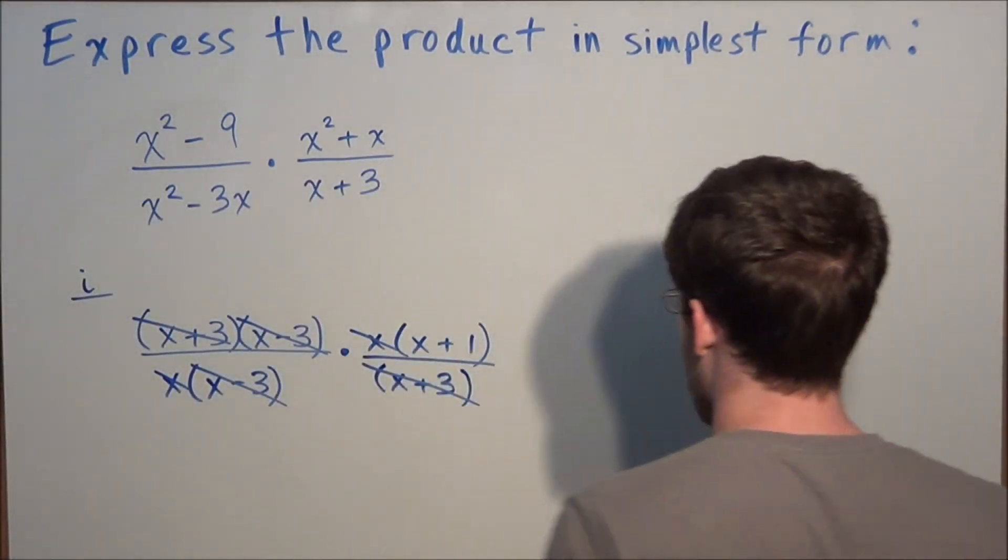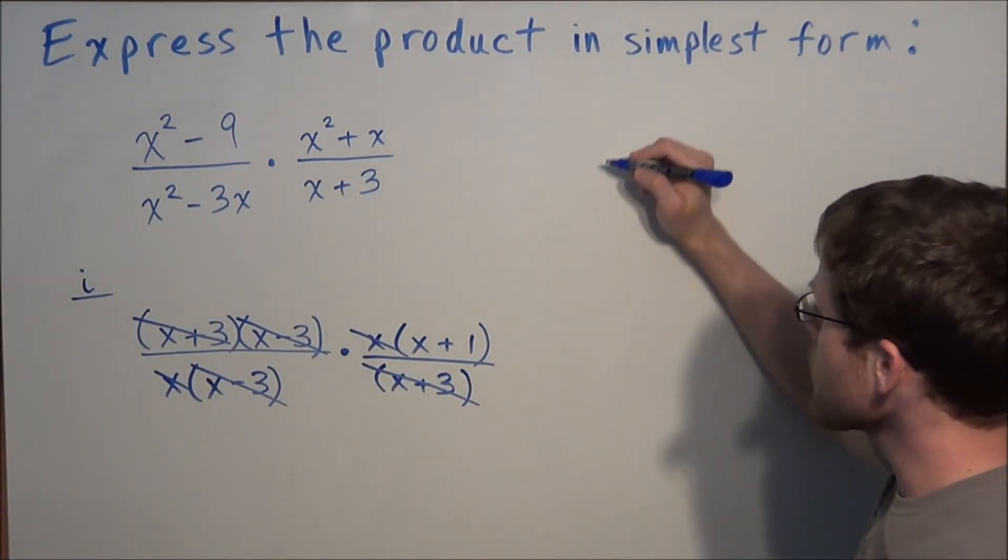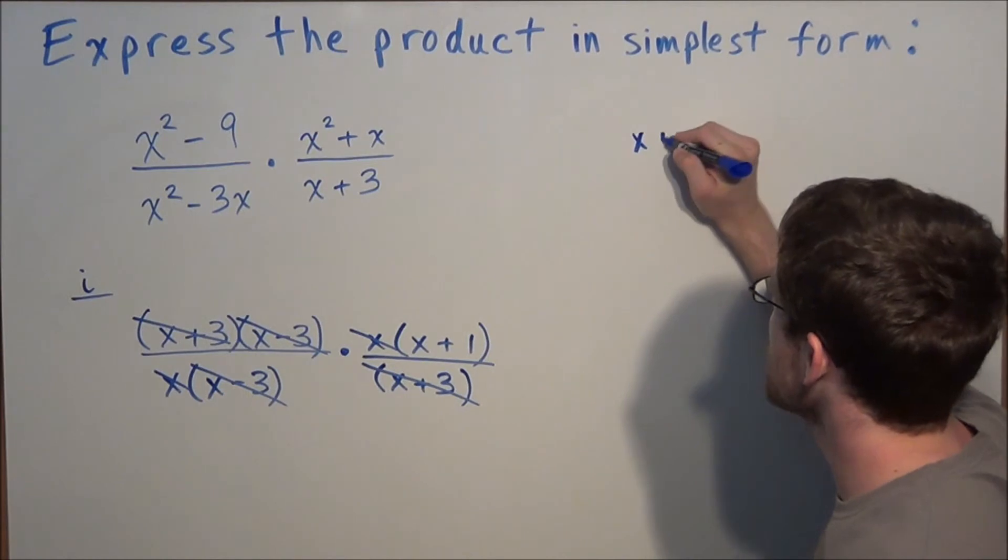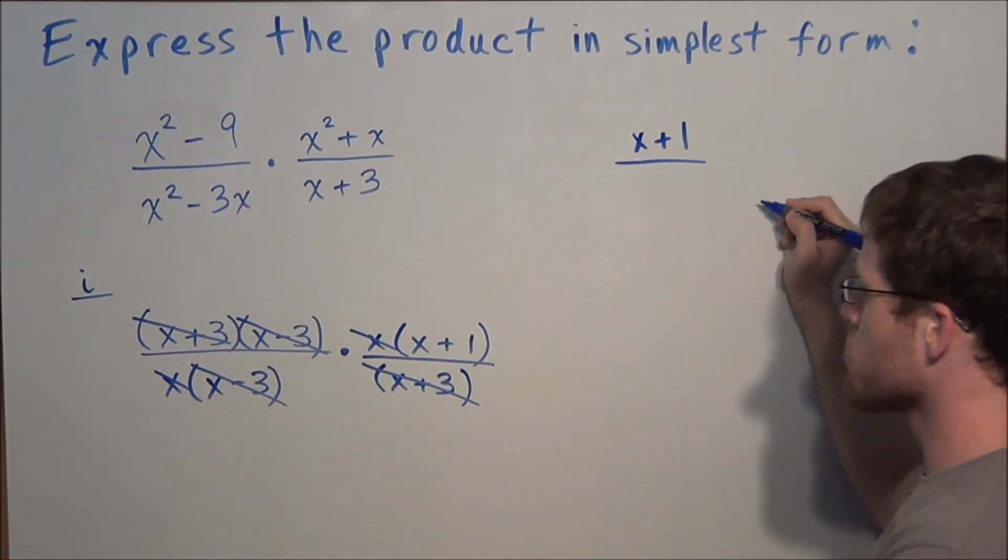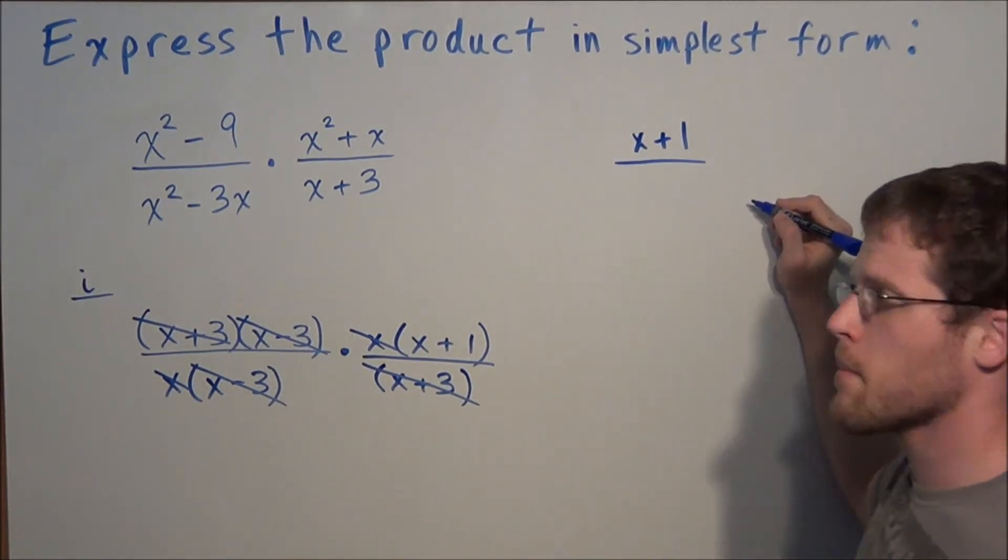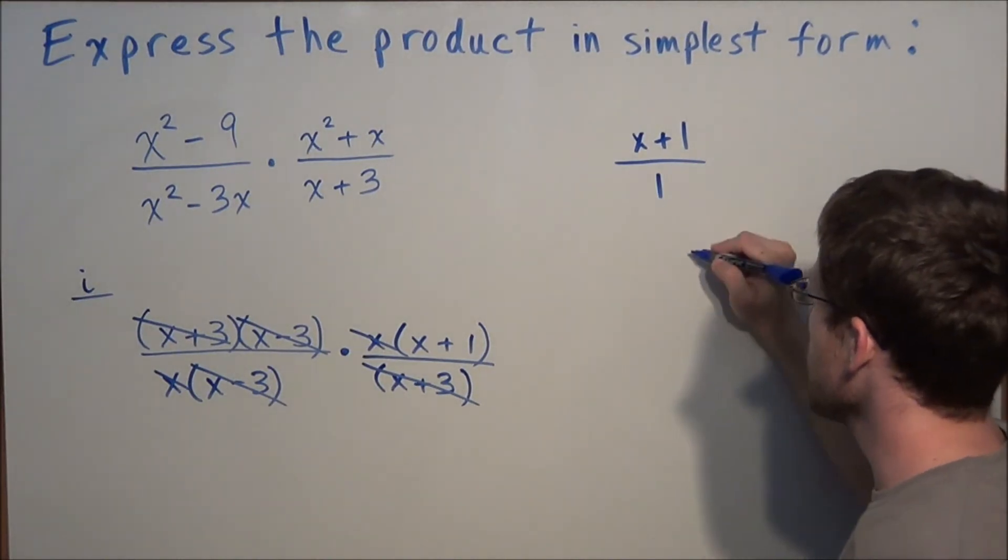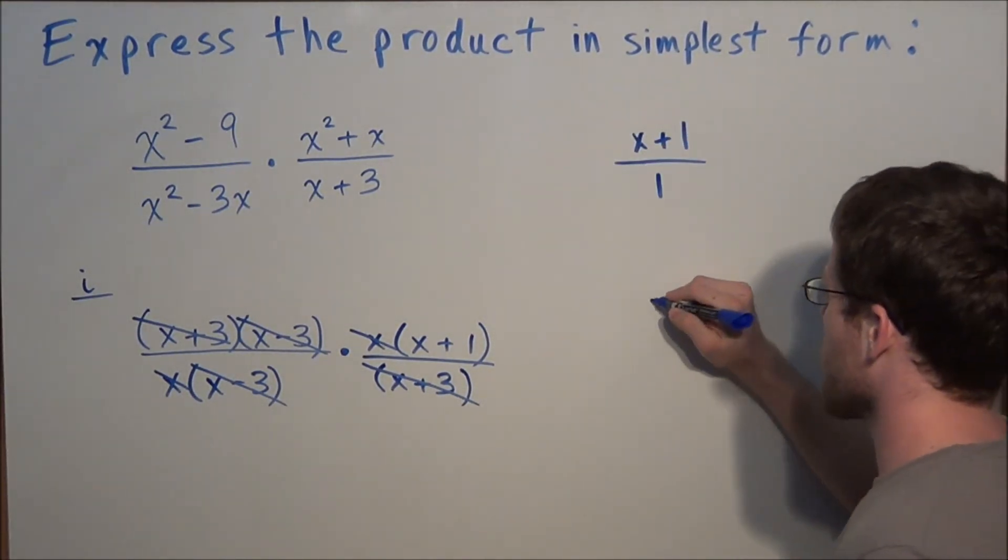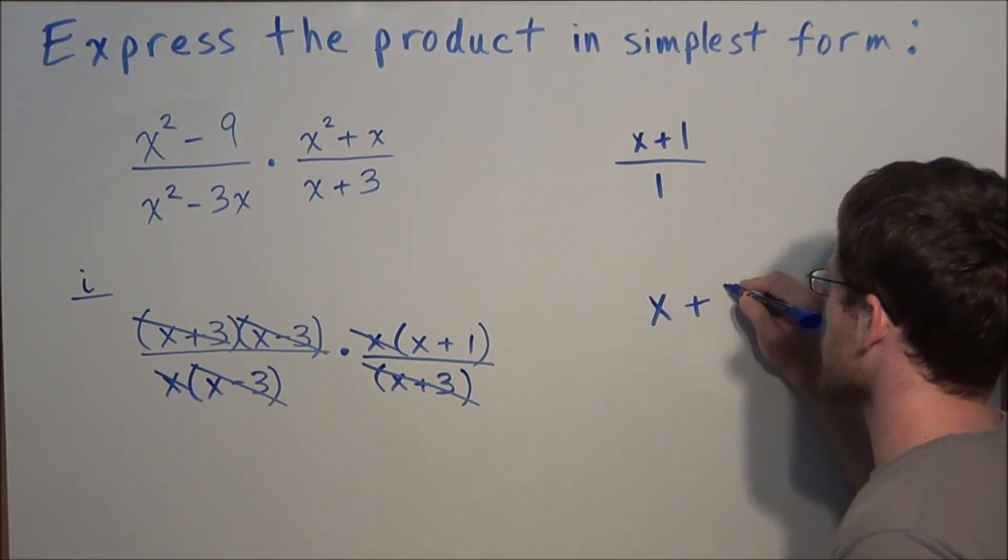This tells us that our final answer to the problem: we have x plus 1 left in the numerator, and everything canceled out in the denominator, so we could just write 1 underneath. This tells us x plus 1 divided by 1, our final answer to this, is x plus 1.